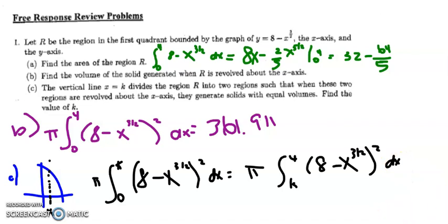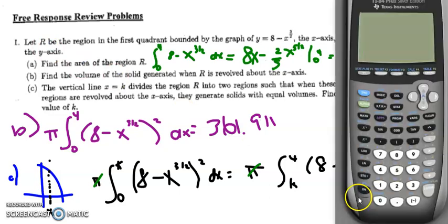So that's interesting because we're going to have to solve for this k value. Right now, I think I'm going to just get rid of the pi's. I can divide out by pi.